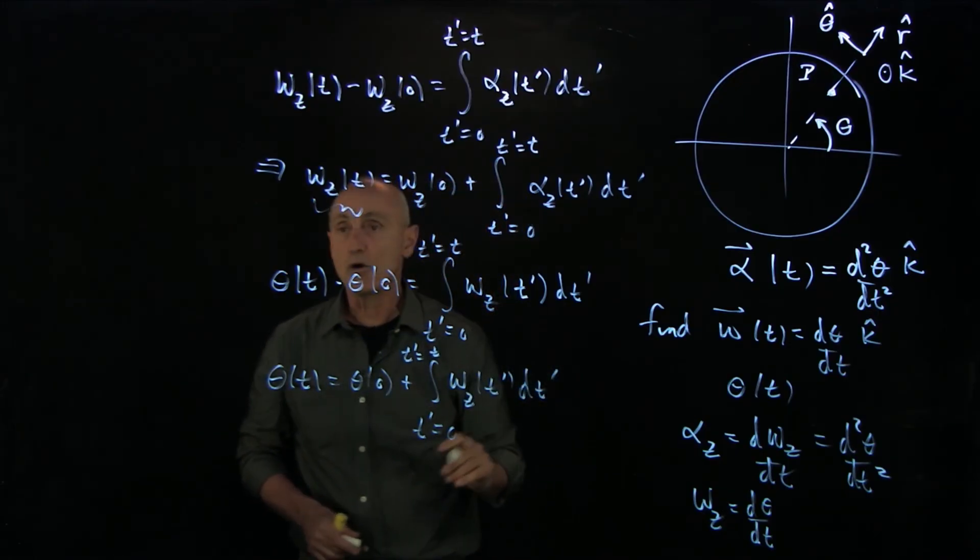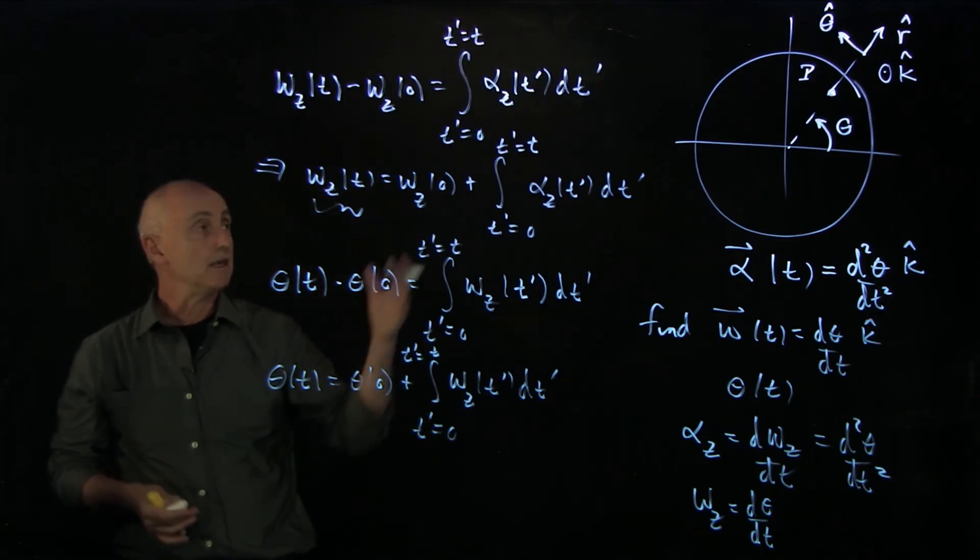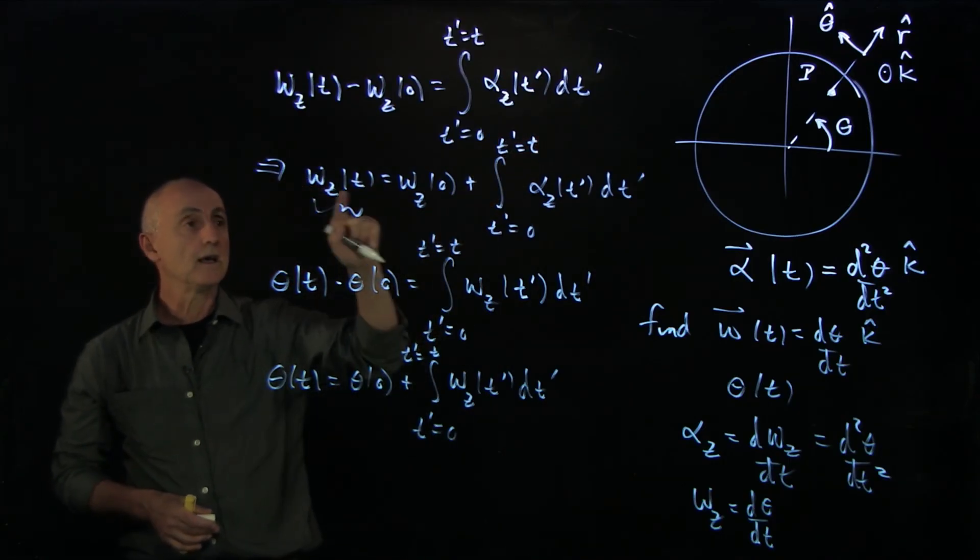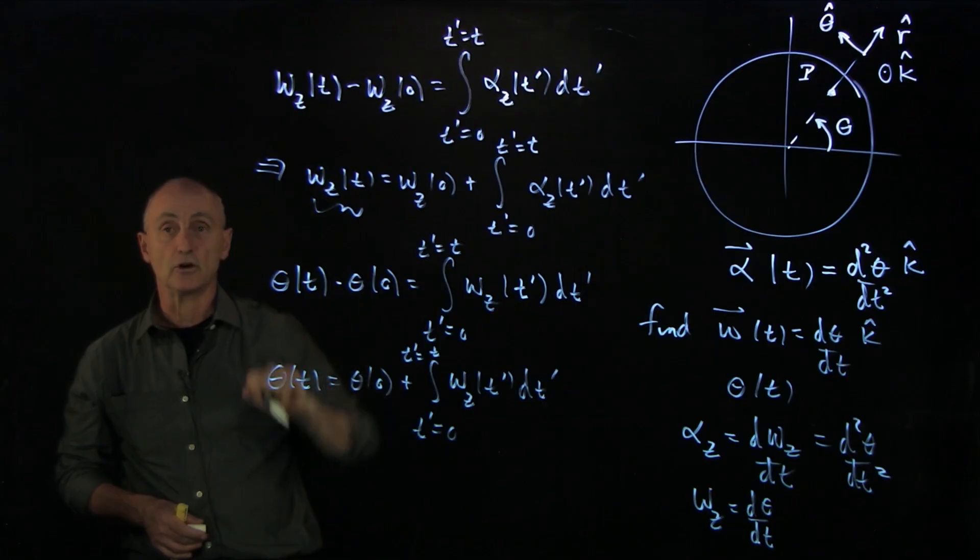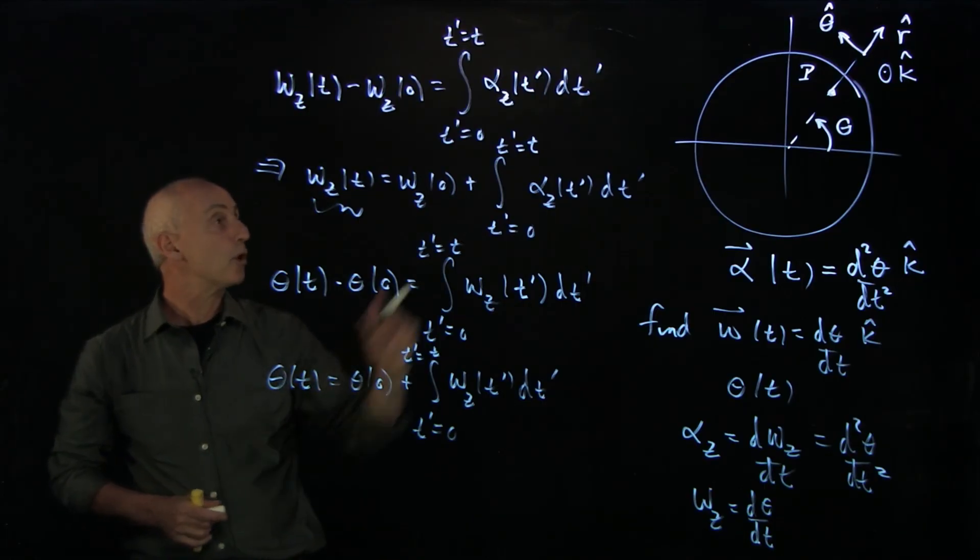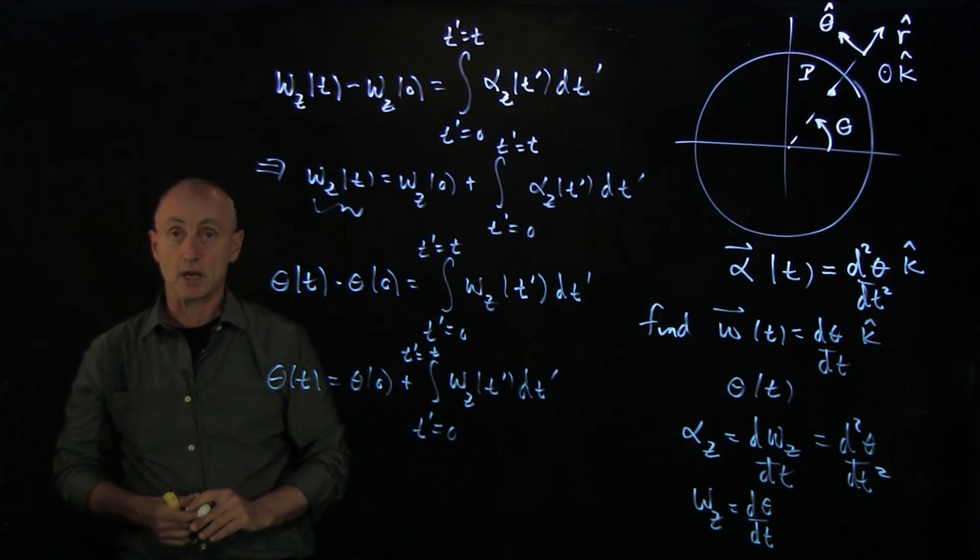And this is how we can figure out how the point P has a component of angular velocity and what angle the point P sweeps out in some time interval t.